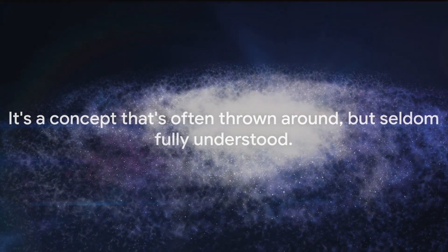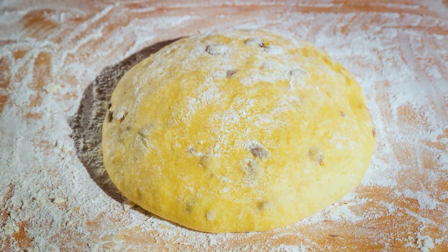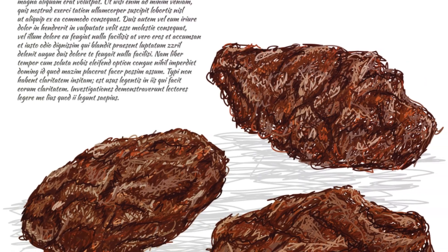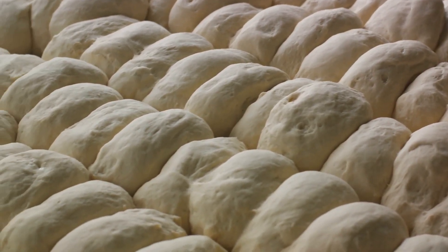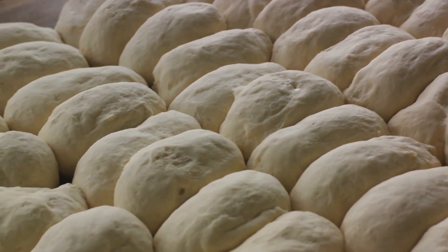Picture a loaf of rising raisin bread. The dough represents the universe while the raisins symbolize galaxies. As the dough rises and expands, the raisins move farther away from each other. They aren't actively moving through the dough, but rather, they're being carried along as the dough itself expands.